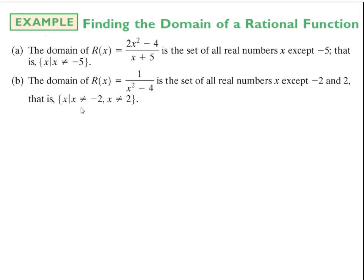In set builder notation, we say it's the set of all real numbers x such that x cannot equal negative 2 and x cannot equal positive 2. So any real number except 2 and negative 2 are valid for the domain of this rational function.